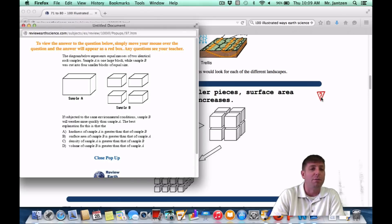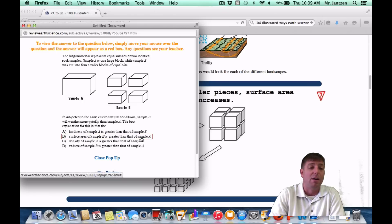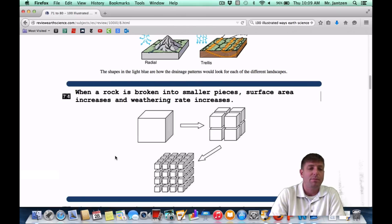As a Regents question, it says the diagram below represents equal masses of two identical rock samples. Sample A is one large block, while sample B is cut into four smaller blocks of equal size. If subjected to the same environmental conditions, sample B will weather more quickly than sample A. The best explanation for this is what? We're talking about surface area, and the fact that there's more surface area in B than in A, or choice B.